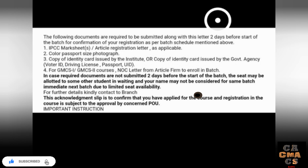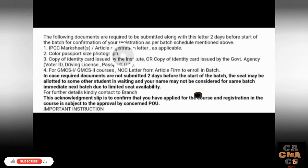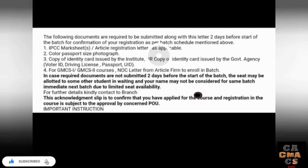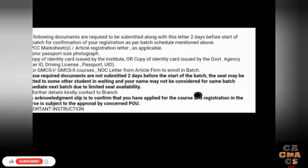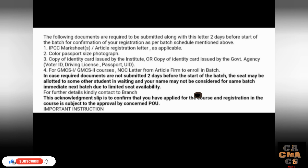After printing, paste your photo on the acknowledgement. Along with it, you also need to submit the following documents: IPCC mark sheet or articleship registration letter, one or two passport-size color photos, a copy of your identity or admit card, or a government ID like a voter ID, driving license, or passport. For GMCS, also include the articleship letter. Submit these documents at least two to three days before your batch start date to get your batch confirmed.